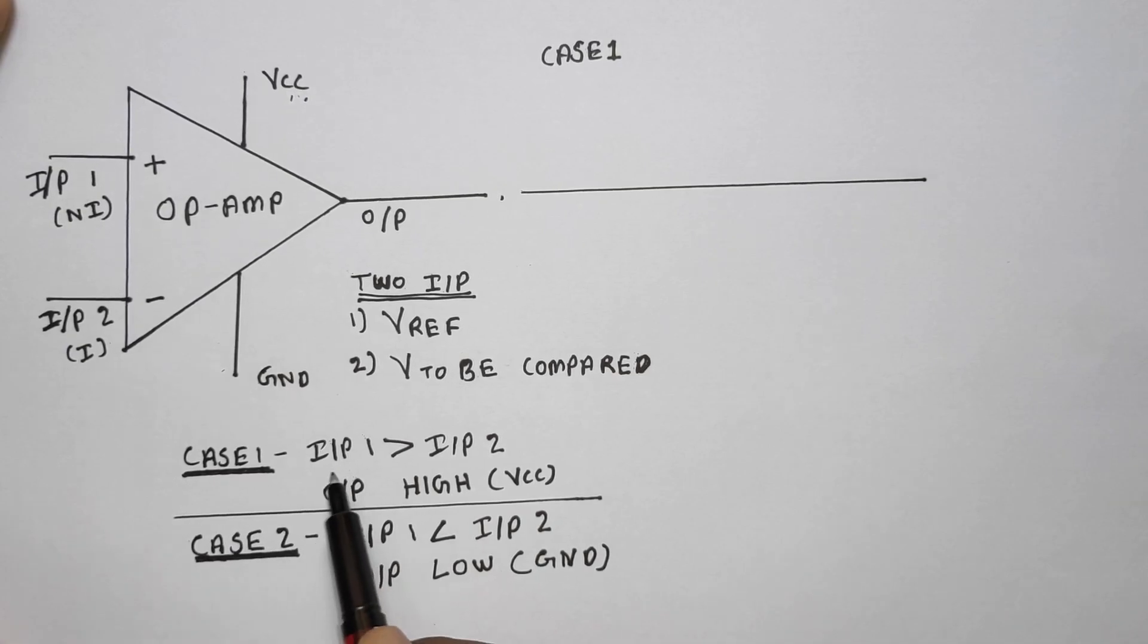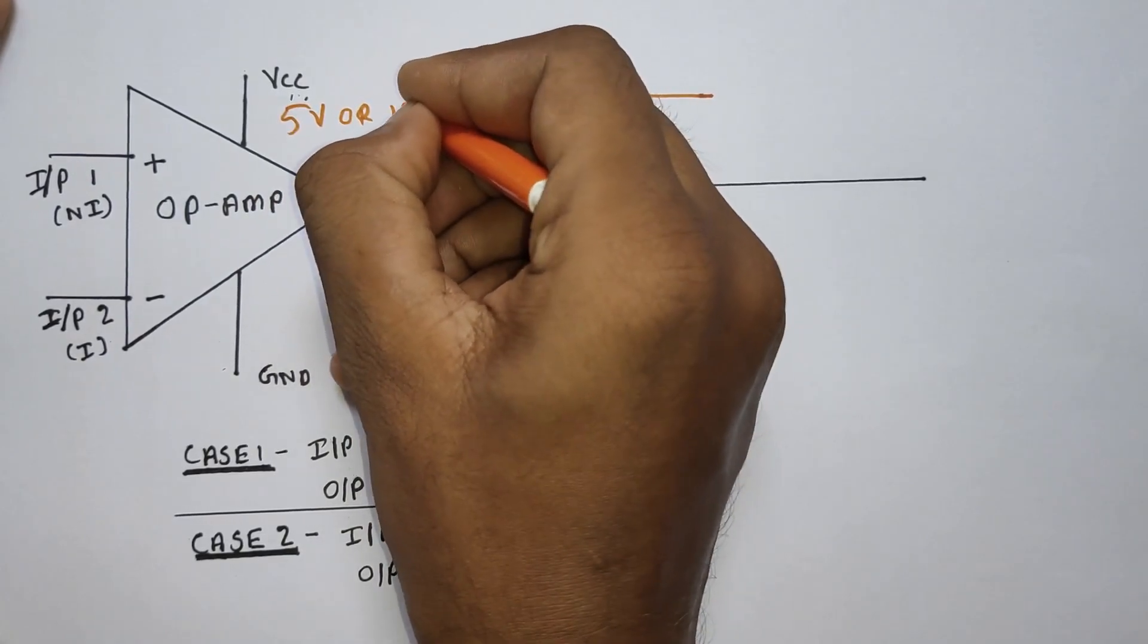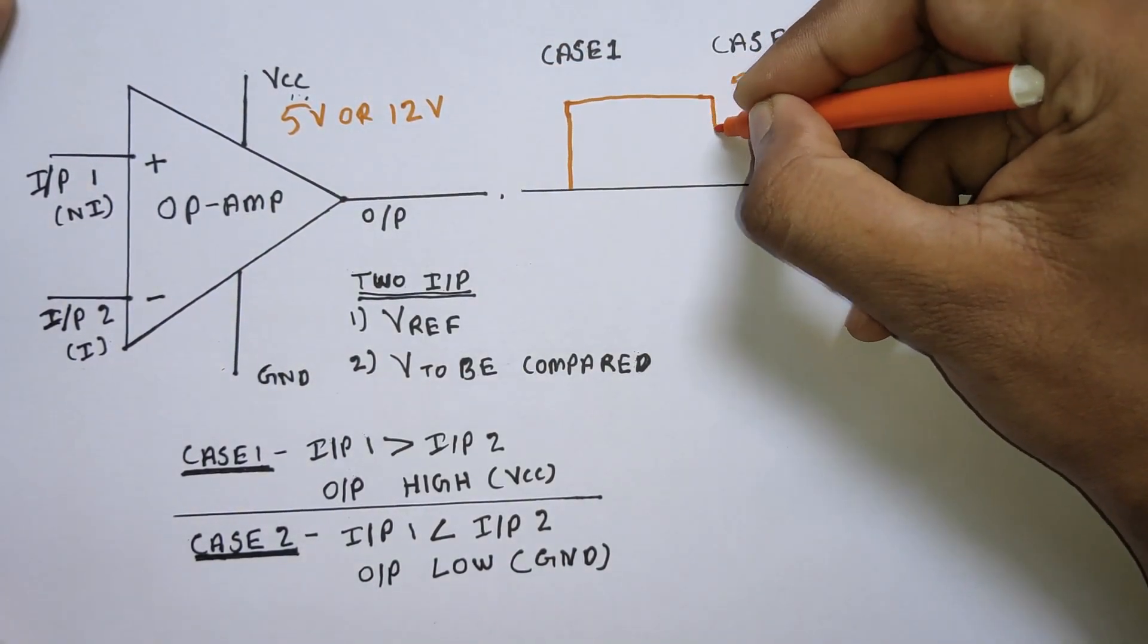Let's visualize the output with a simple graph. If case 1 is satisfied, output will be high. The output voltage will depend upon the supply voltage. If case 2 is satisfied, the output will be low.